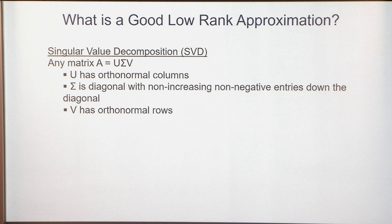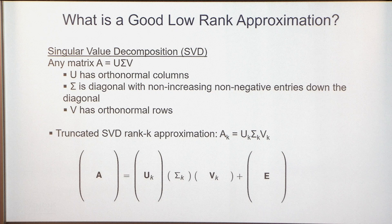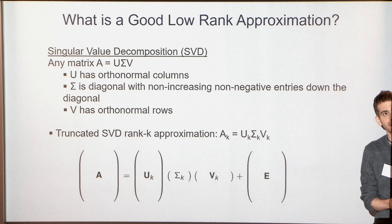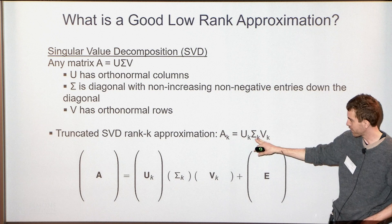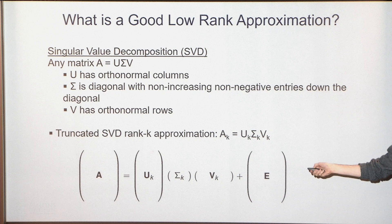The standard way of getting a low-rank approximation is through the singular value decomposition or SVD. Any matrix A can be written as U Σ V, where U has orthonormal columns, Σ is a diagonal matrix with non-increasing non-negative entries, and V has orthonormal rows. The standard approach is the truncated SVD — you take the top K singular values and zero out the rest, giving Σ_K. This selects the K leftmost vectors of U and uppermost vectors of V, yielding a rank-K matrix A_K, which approximates A up to an error matrix E depending on the remaining singular values.